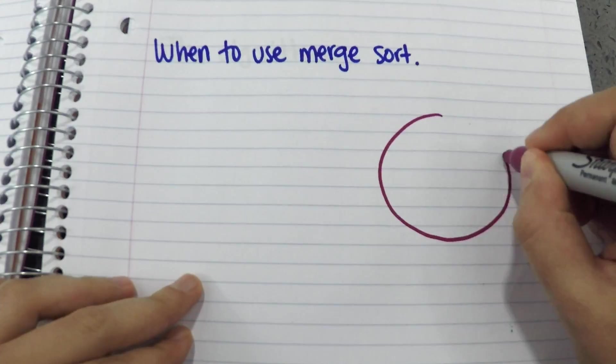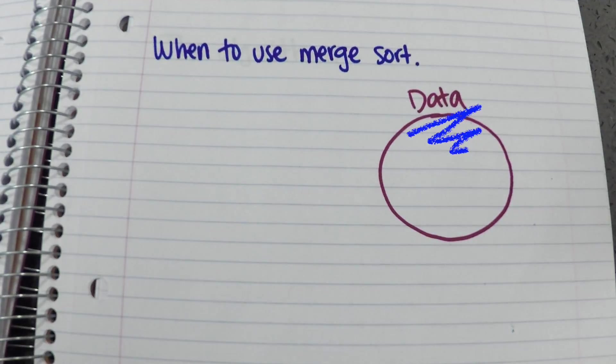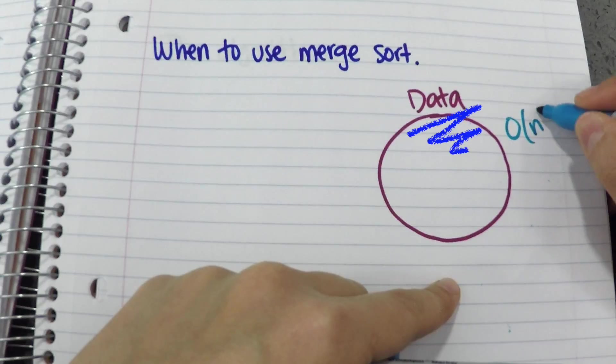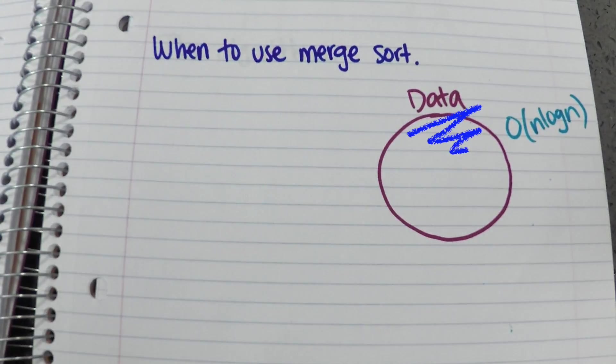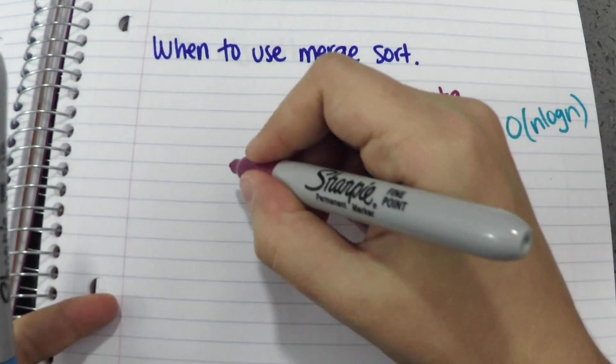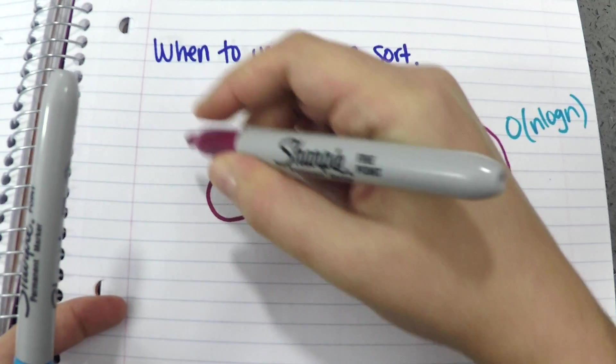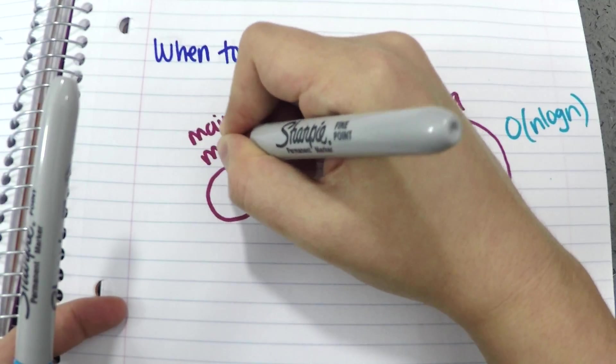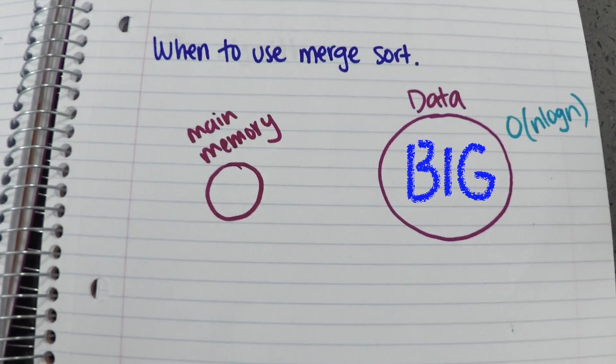You use Merge Sort when you need to sort large amounts of data. Since the worst case scenario for time is O n log n, Merge Sort is faster for sorting large amounts of data. It is typically used to do an external sort, basically when the size of your data is bigger than what you can fit in main memory.